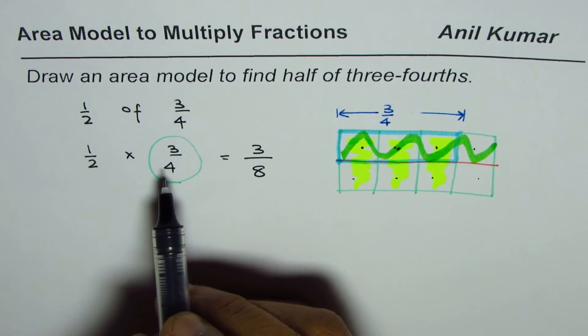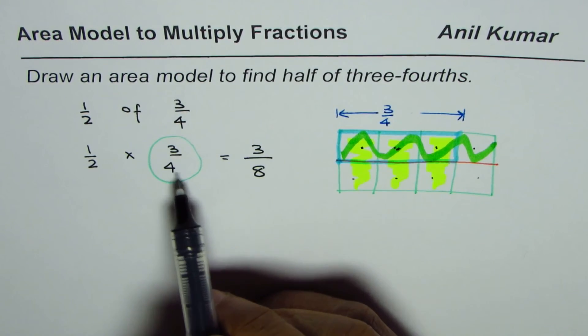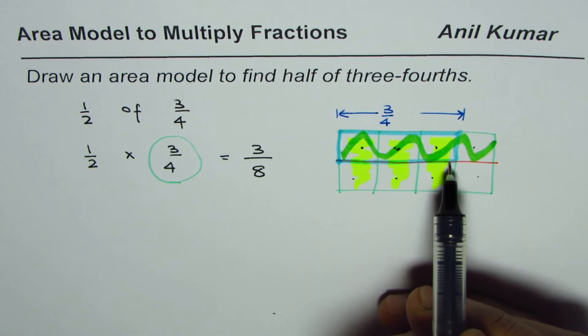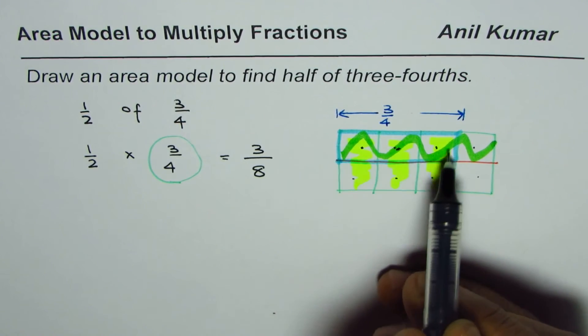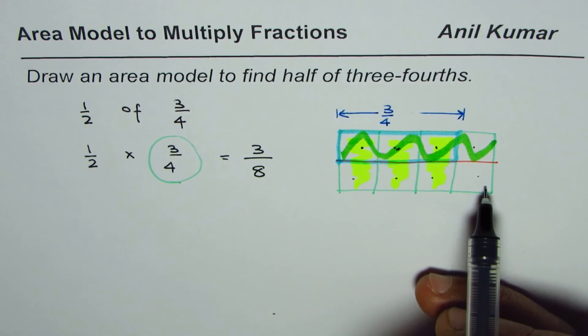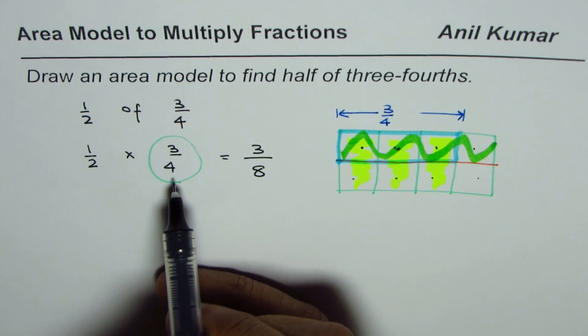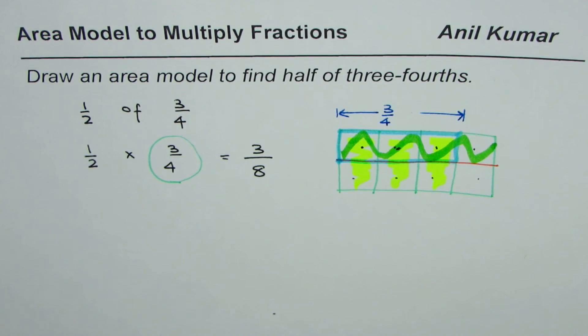What we do here is select three out of four, half it, and then see what is the common area to get the answer. So the common area, that is the part of the whole, gives you the product of half and three-fourths or represents half of three-fourths. I hope that helps. Thank you and all the best.